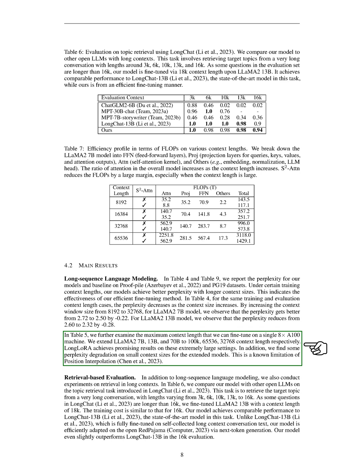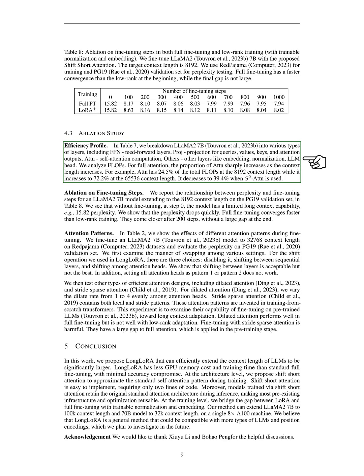Unlike LongChat-13B, which was fine-tuned using a large amount of conversation text, our model was efficiently adapted using the open-source RedPajama dataset through next token generation. Our model even slightly outperformed LongChat-13B in the 16,000-word evaluation. We analyzed the efficiency of LLaMA-2 7B by breaking it down into layer types: feed-forward layers, projection for queries/values/keys and outputs, self-computation, and other layers like embedding, normalization, and LM head. The proportion of self-computation increases significantly with context length — from 24.5% at 8,192 tokens to 72.2% at 65,536 tokens — but decreased to 39.4% when using our attention mechanism.